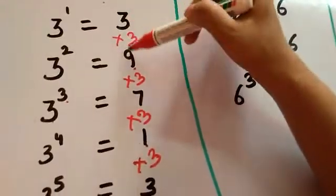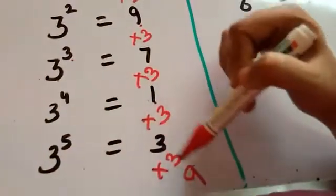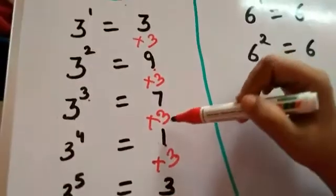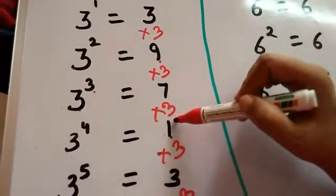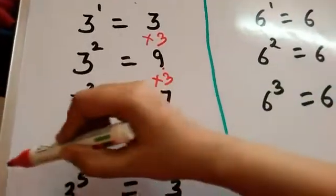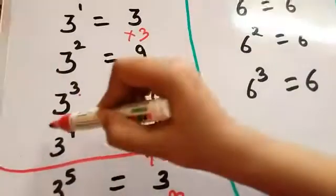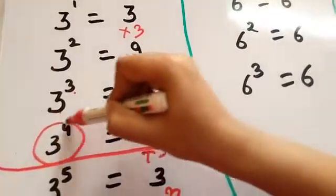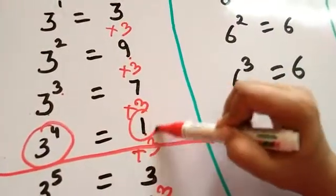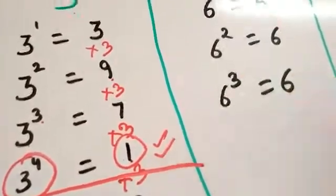So the cycle is 3, 9, 7, 1, 3, 9, and so on. After 3 raised to the power 4, everything is repeating. So the cycle for 3 is 3 raised to the power 4, with the result of 1.